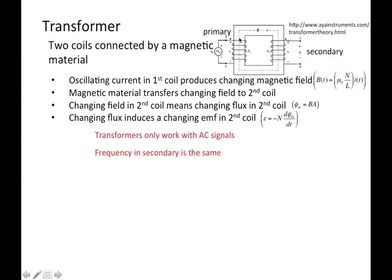The two coils — one's called the primary, that's the place where you put your input signal, and one's called the secondary, that's typically where you hang your circuit, or the part of the load that you're going to attach to the circuit.